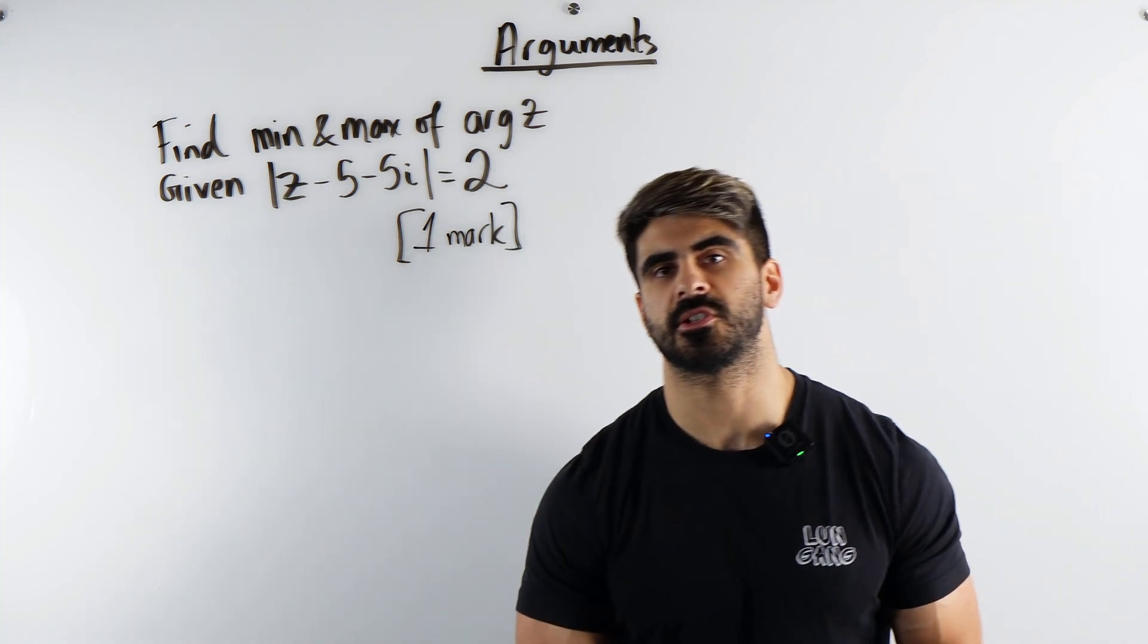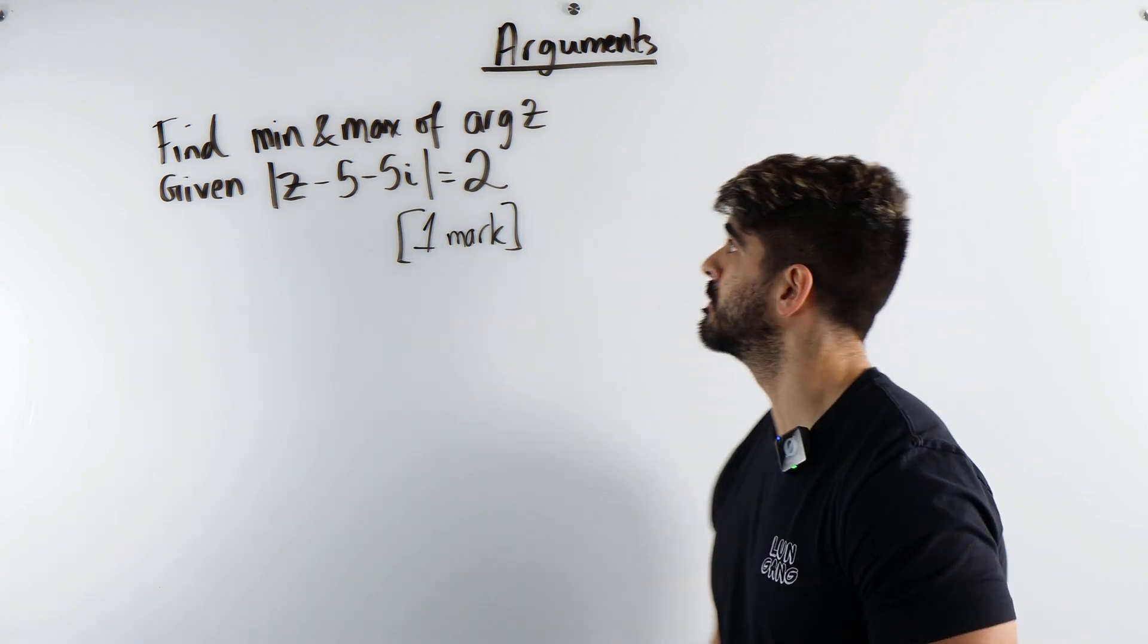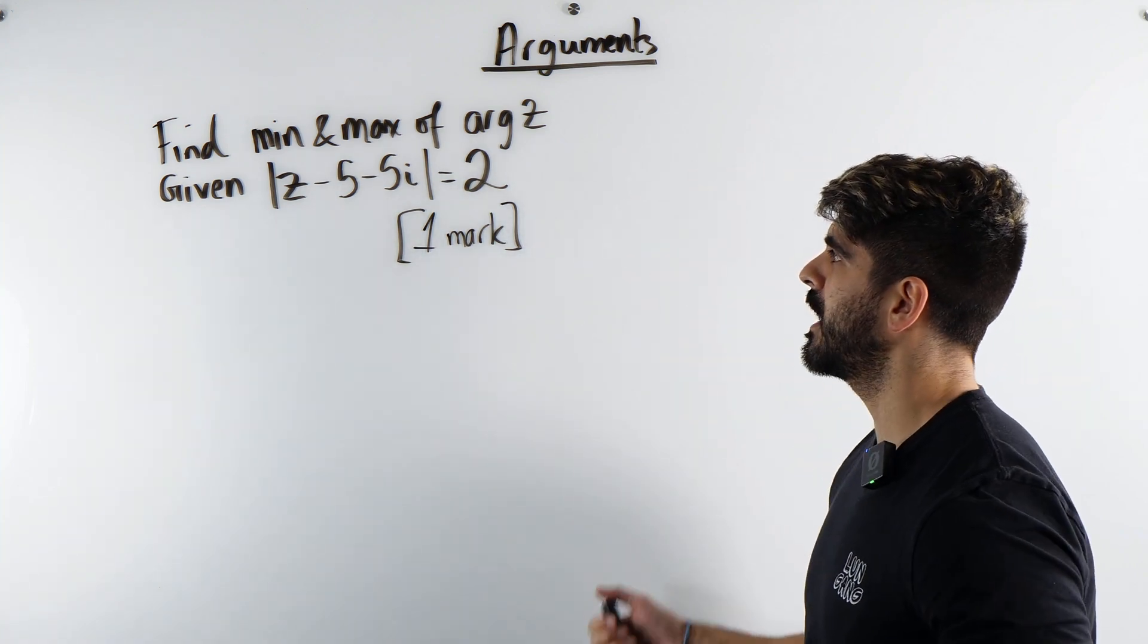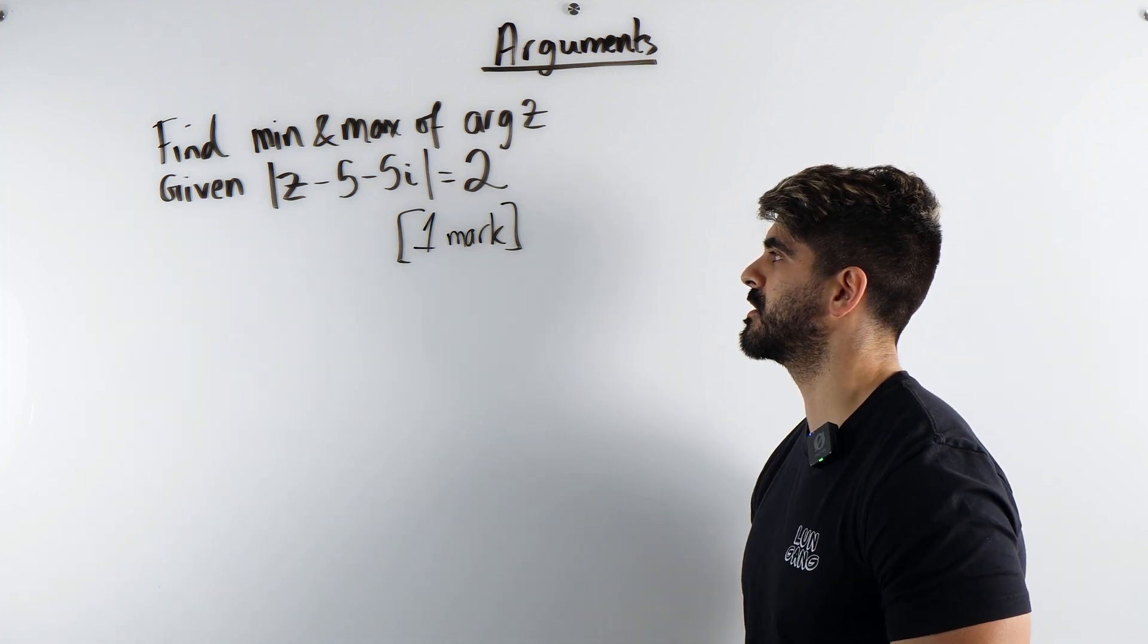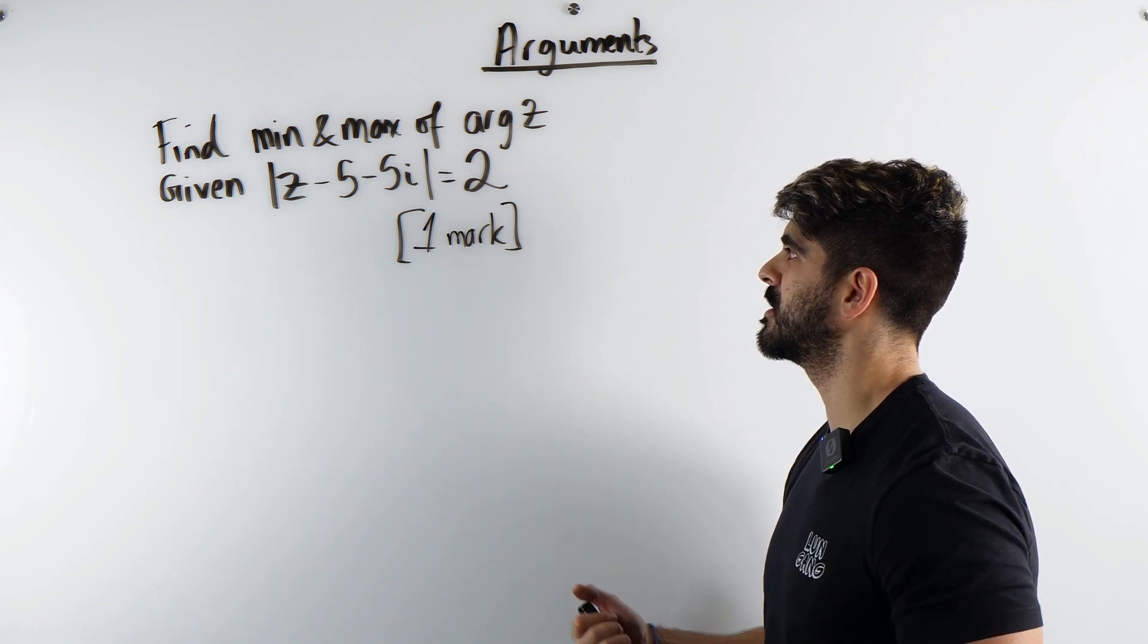If you're training to become a lawyer you need to know how to answer this one mark question on how to argue in it. Arguments. Find the minimum and maximum value of arg z given modulus z minus 5 minus 5i is equal to 2.